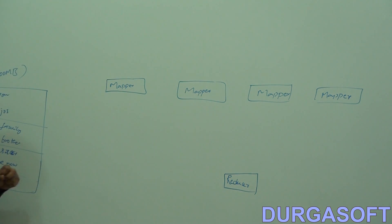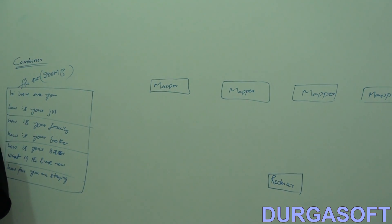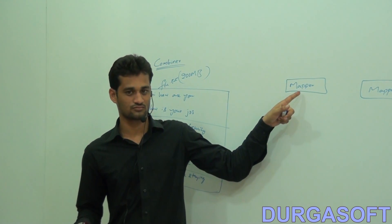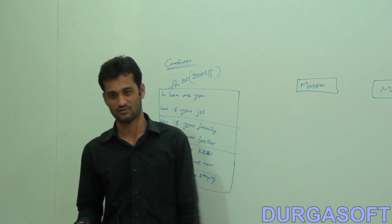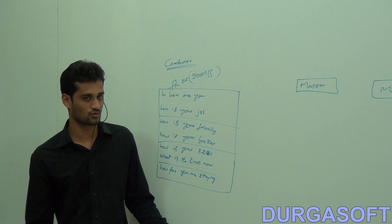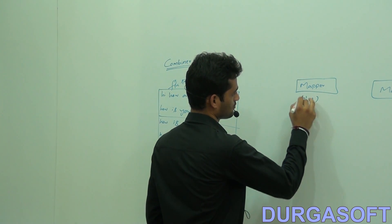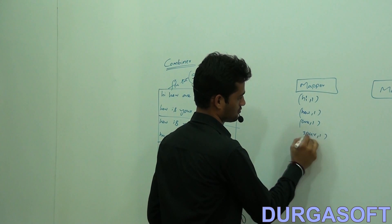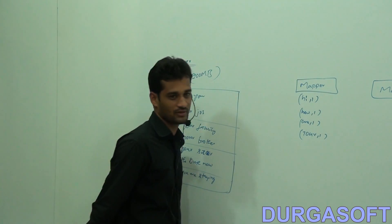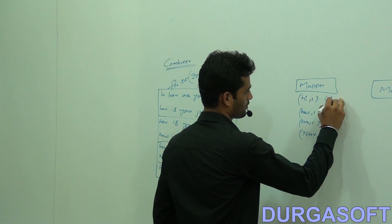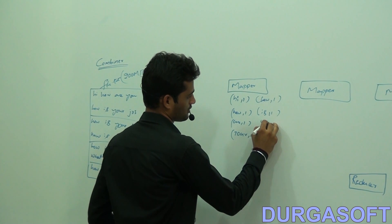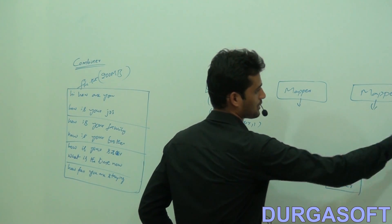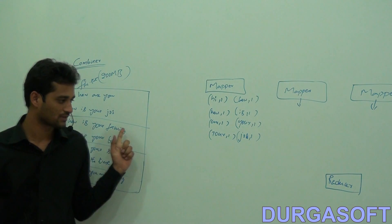Observe here. Consider this job is our vote count job. The first mapper will give key-value pairs — for example: 'hi comma 1', 'how comma 1', 'r comma 1', 'u comma 1'. The second input split gives: 'how comma 1', 'is comma 1', 'your comma 1', 'job comma 1'. Likewise, each mapper is giving output for all your input splits.